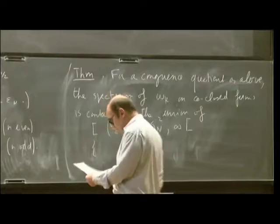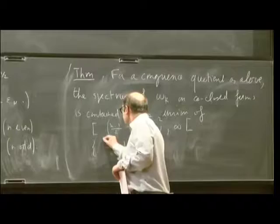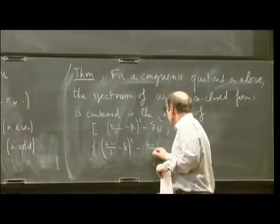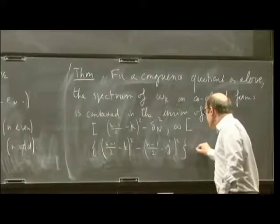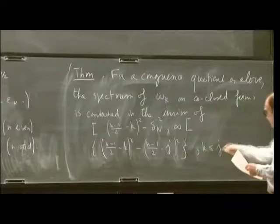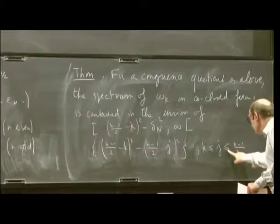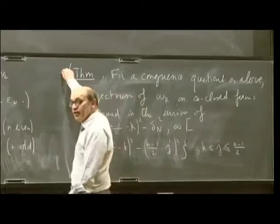And then the other eigenvalues are really quantized. So N minus 1 over 2, minus K to the square, minus N minus 1 over 2, sorry, minus J to the square, where here K is larger than, smaller than, J is between K, sorry, and N minus 1 over 2. I want strictly smaller here. You can check in the original conjecture, that's what we want.